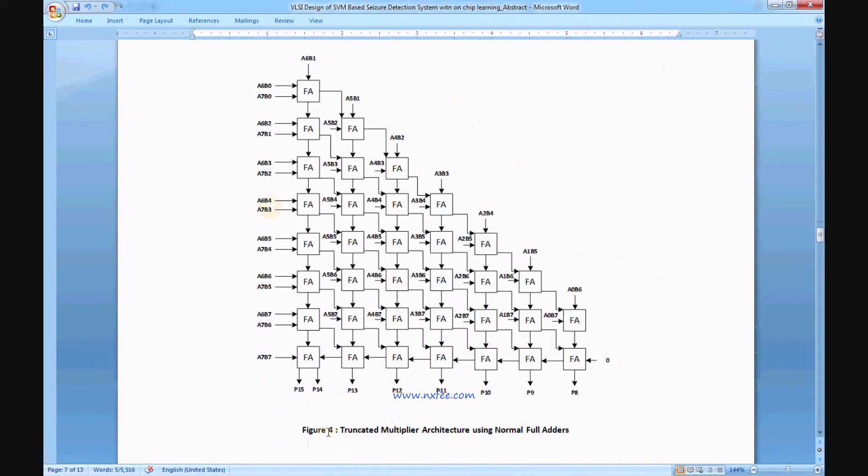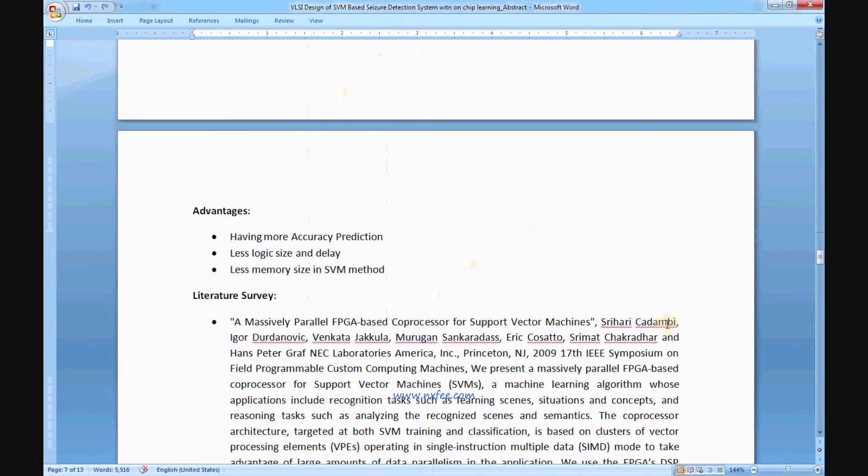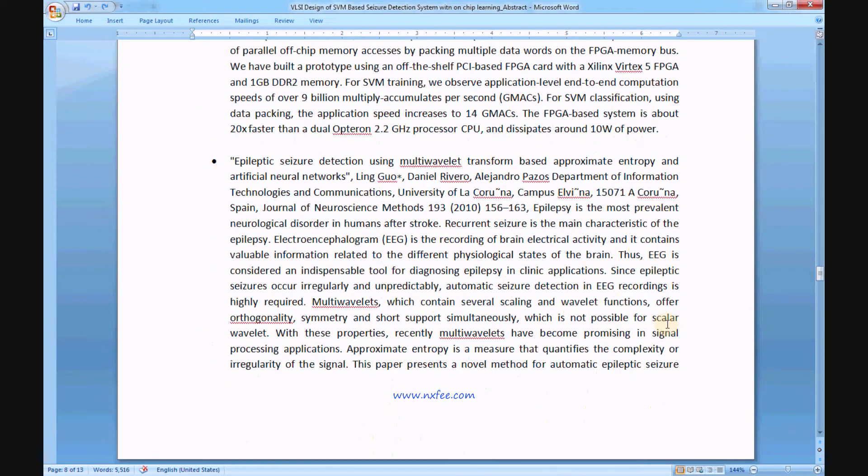Details are given in the truncation multiplier architecture. Figure 4 shows the truncation multiplier architecture using normal adders. This is 8-bit multiplication. All architectures are designed in Verilog HDL, simulated in ModelSim software, and synthesized in Xilinx FPGA.